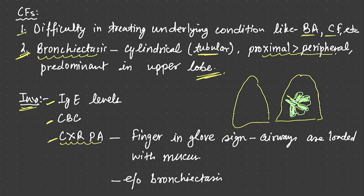So finger in glove sign is seen in chest x-ray PA. Here is evidence of bronchiectasis on chest x-ray as well as HRCT. Now there are two signs of bronchiectasis which are pathognomonic on HRCT.